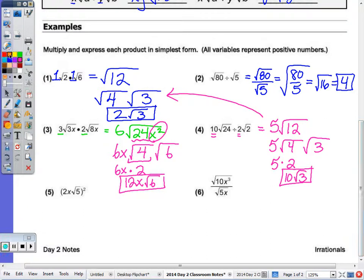The bottom of the page, whenever you have a square, I would encourage you to write it out twice. So expand, then multiply. 2x times 2x is 4x squared. 5 times 5 is 25, and the square root of 25 is 5. So 5 times 4x squared is 20x squared.